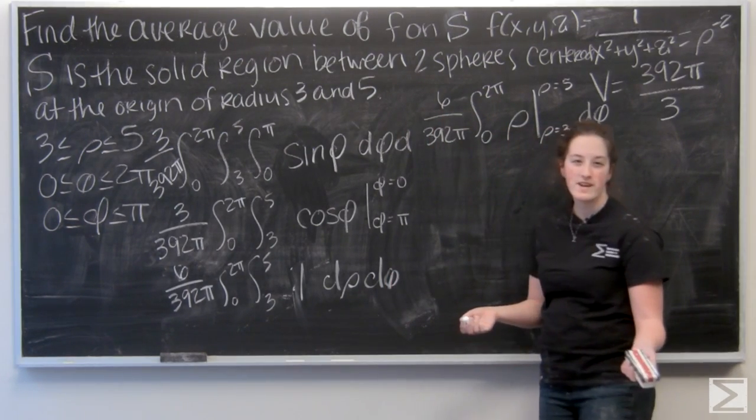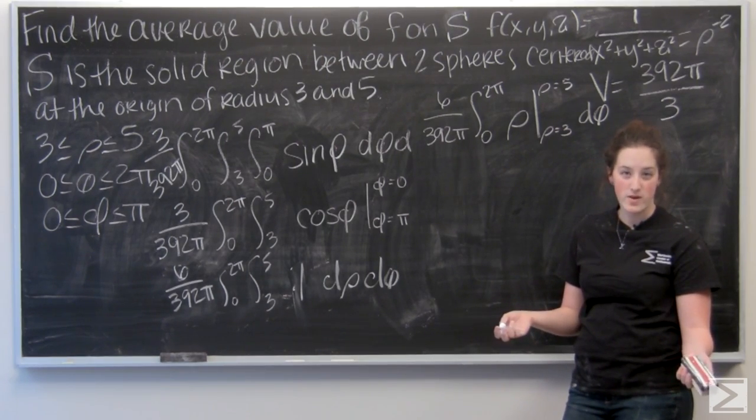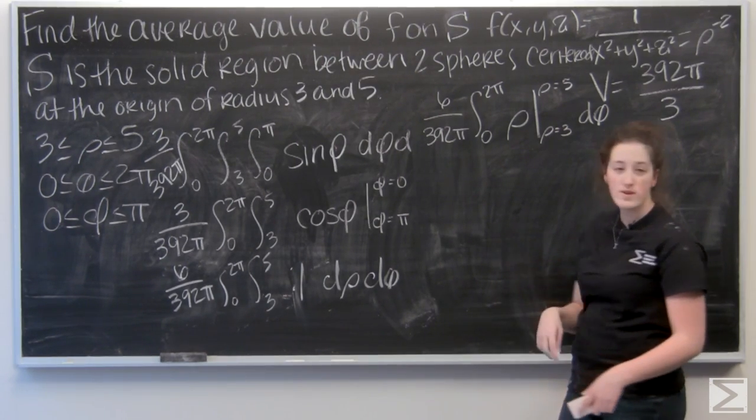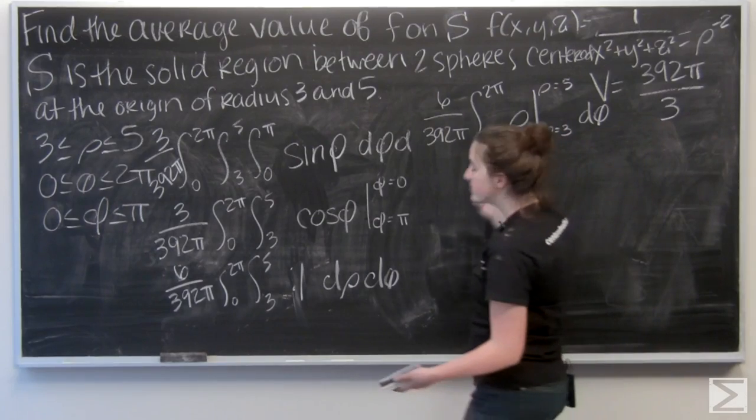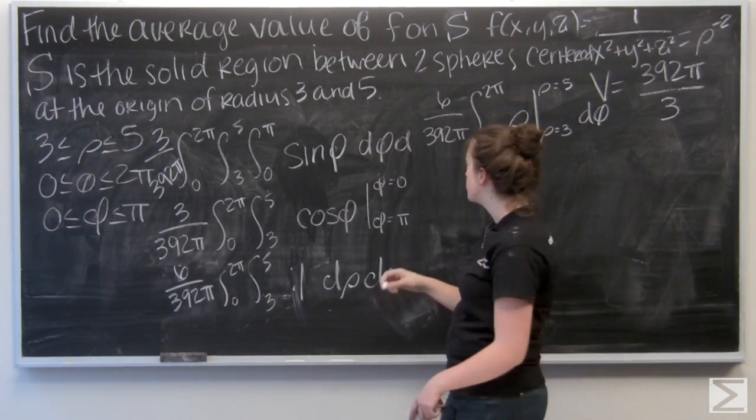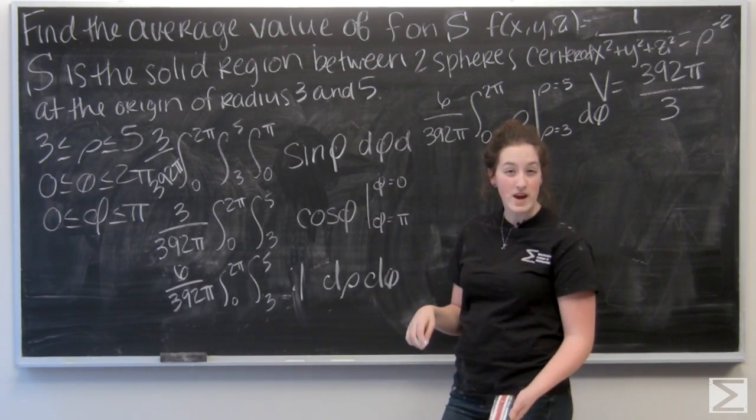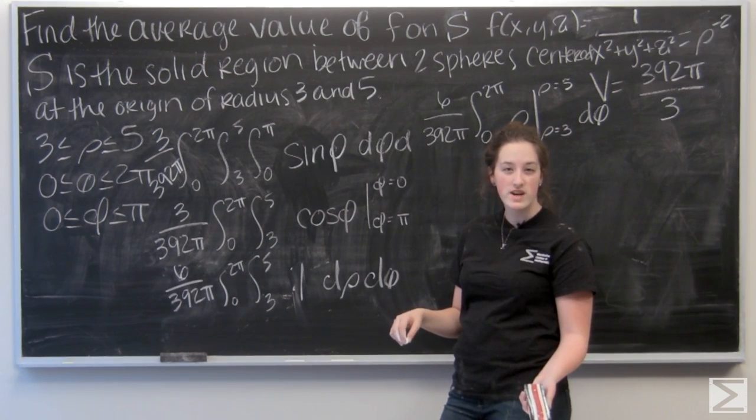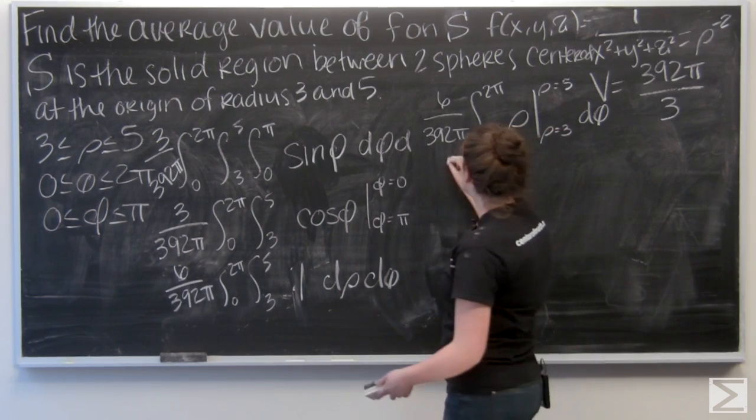So I want to integrate from rho equals three to rho equals five. Let me go ahead and plug in five first. I'm going to have five minus three, which is going to be two. I'm going to multiply that by my fraction out front to get 12 over 392 pi. Just a little bit easier for me to work with.